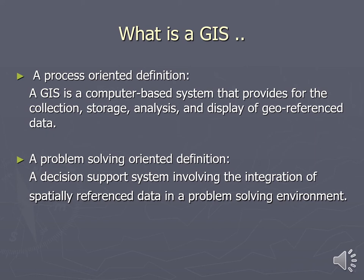Let's go back over these definitions. From a process standpoint, a GIS is a computer-based system that provides collection, storage, analysis, and display of geo-referenced data. From a problem-solving oriented definition, it's much more about decision-making — basically a support system that uses spatially referenced data in a problem-solving environment. It basically asks: what if this happened, or if I change something, what will then happen? And it allows us to make those decisions.